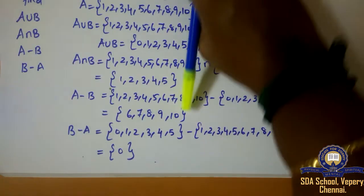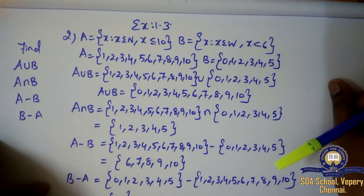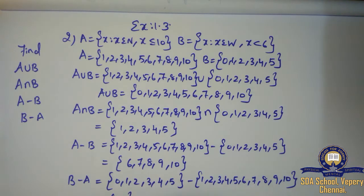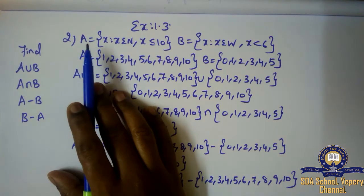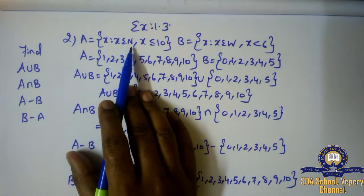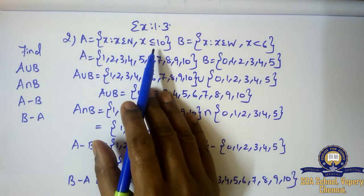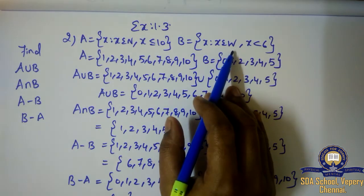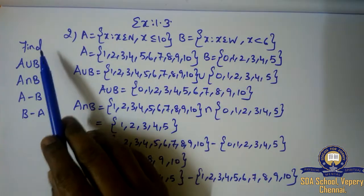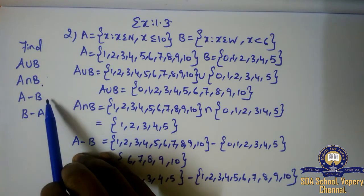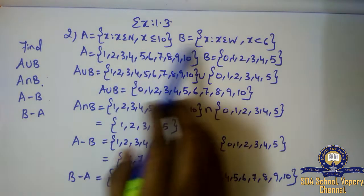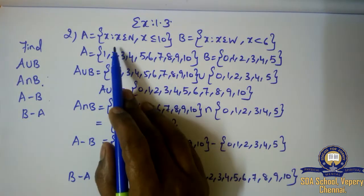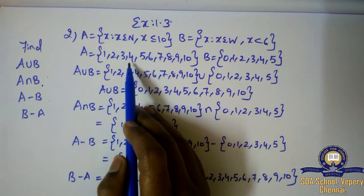Now we go to Exercise 1.3. The second sum: A is equal to {x : x belongs to natural numbers, x is less than or equal to 10}. B is equal to {x : x belongs to W (whole numbers), x is less than 6}. Find A union B, A intersection B, A minus B, and B minus A. These four subdivisions are to be done for the same question. The question is given in set builder form, so we need to convert it into roster form.